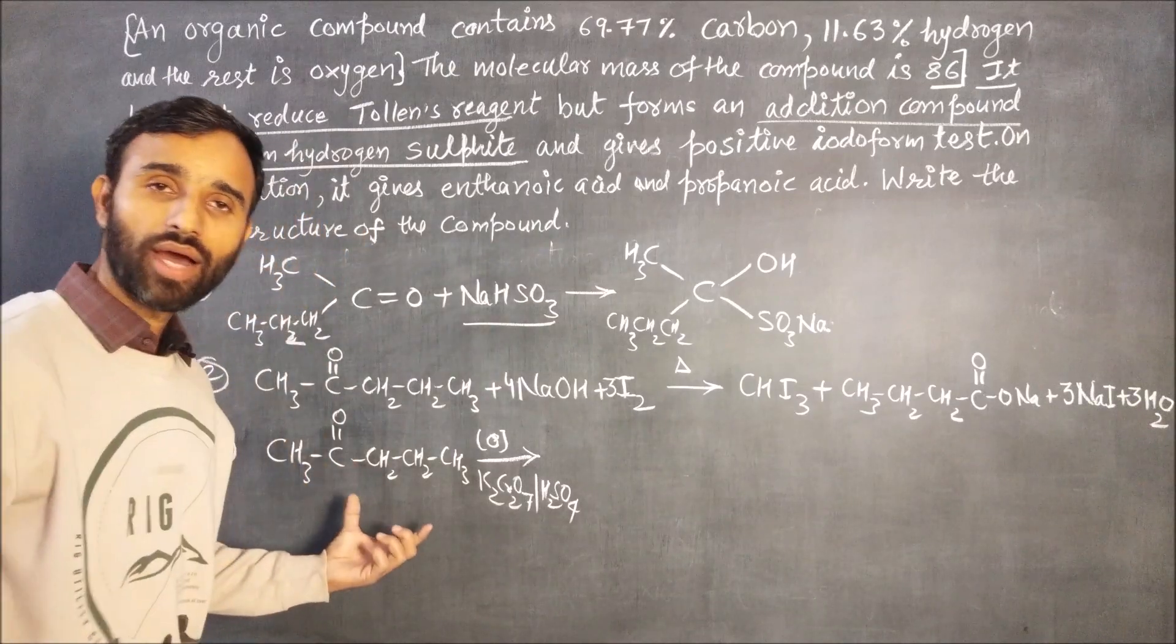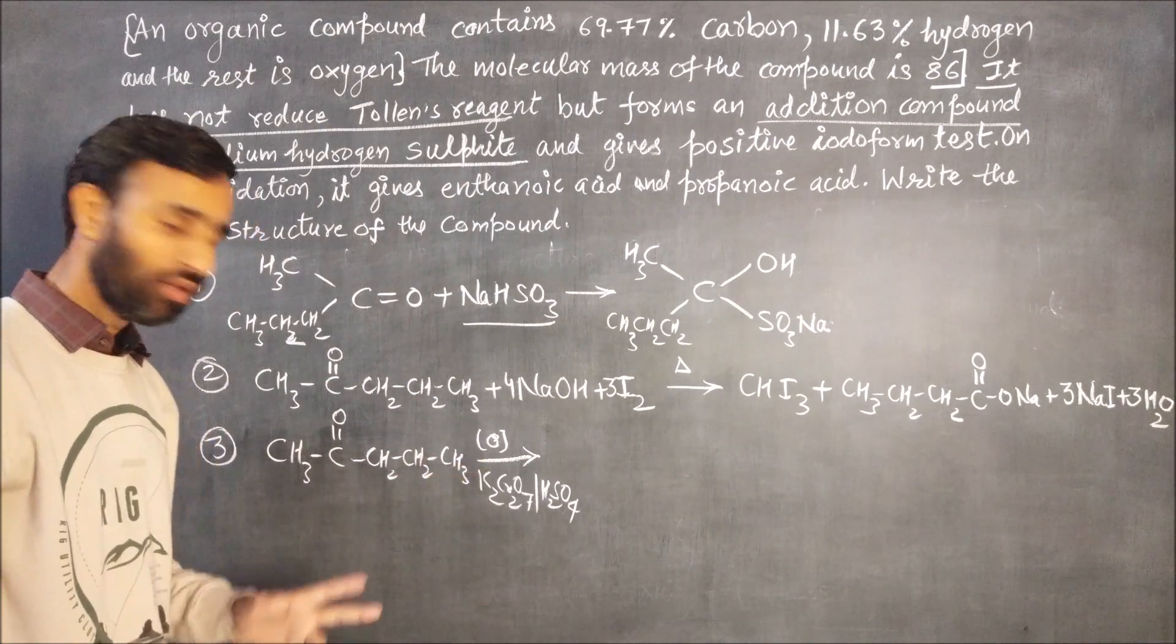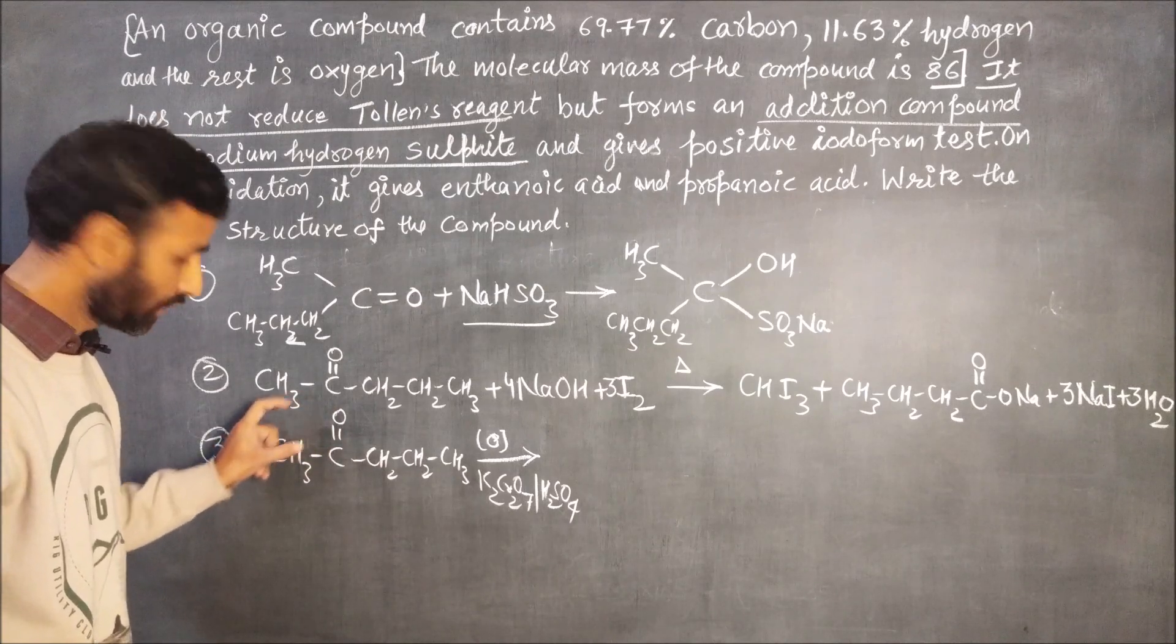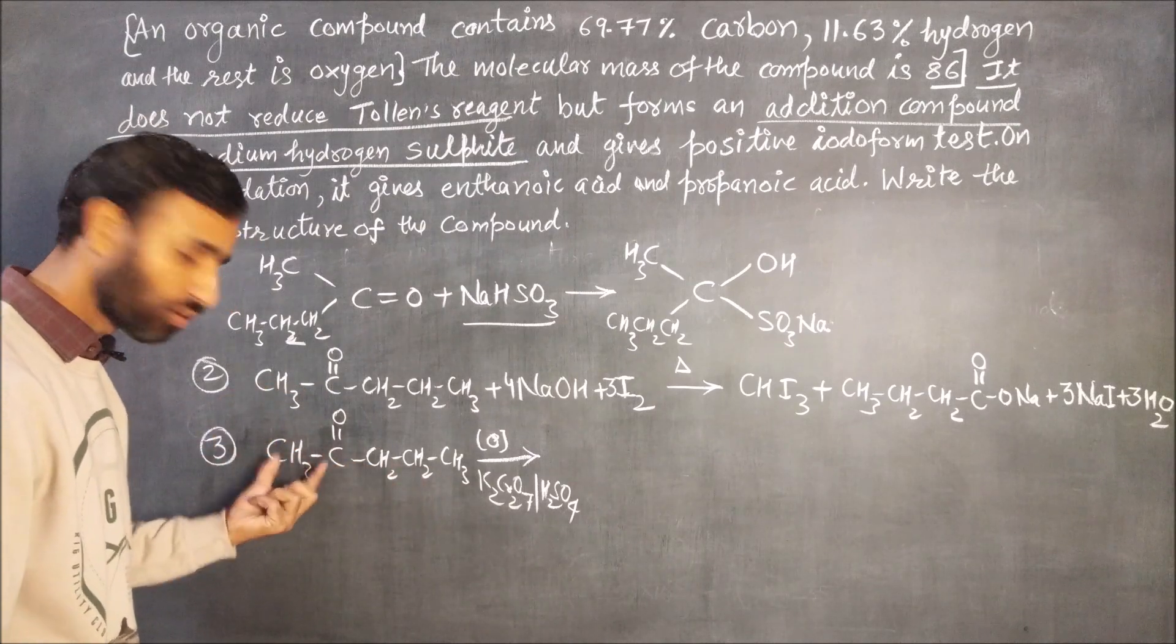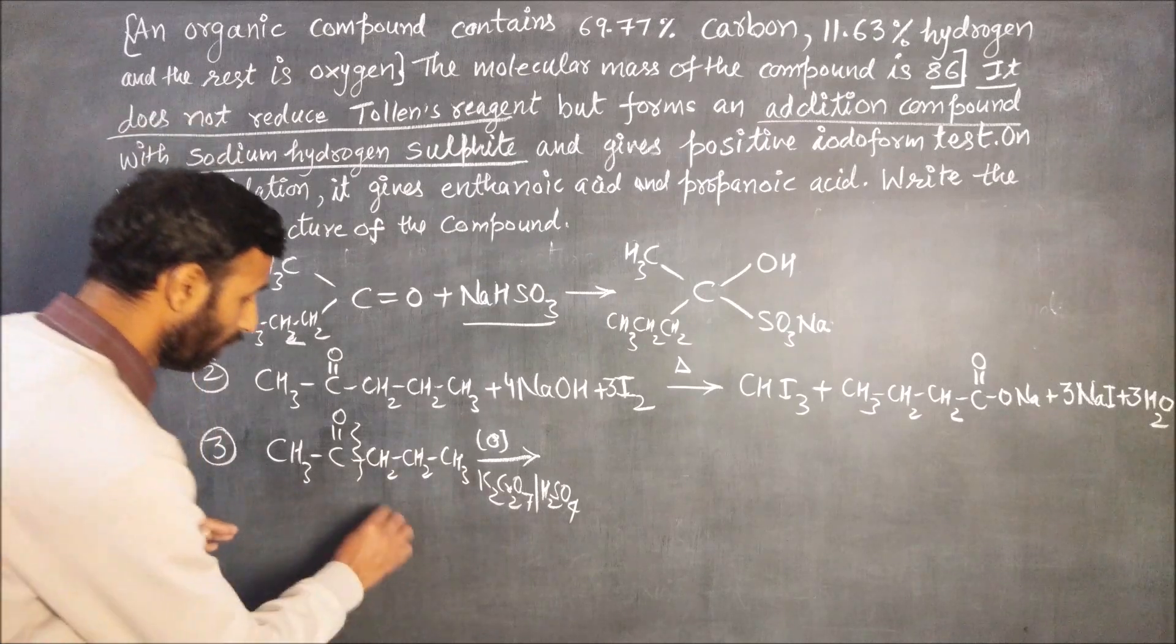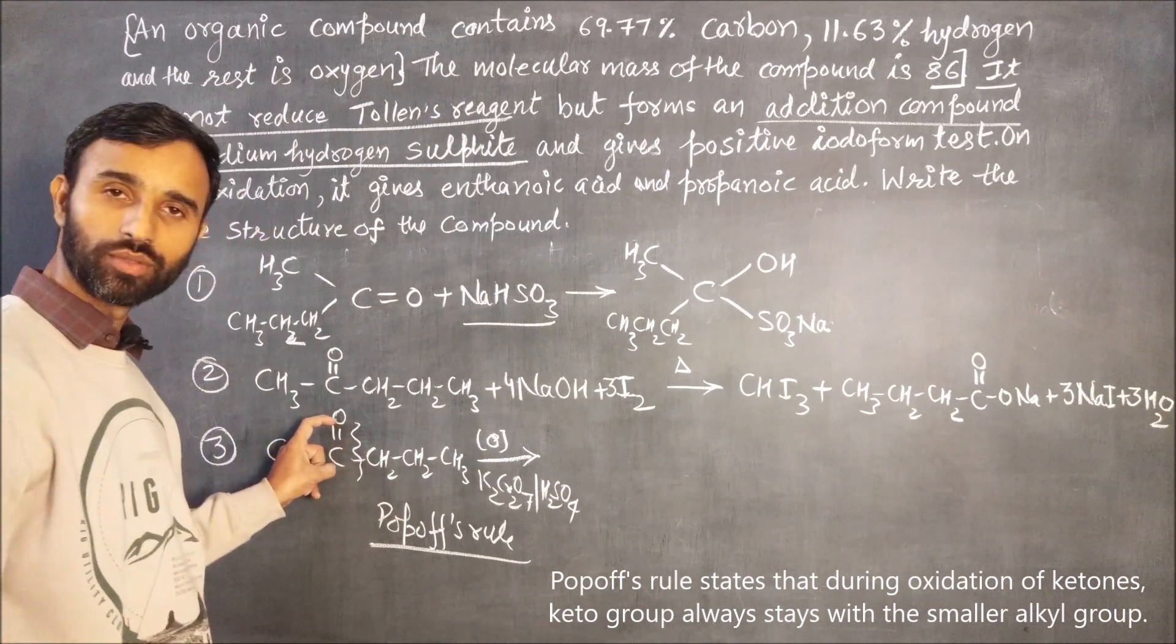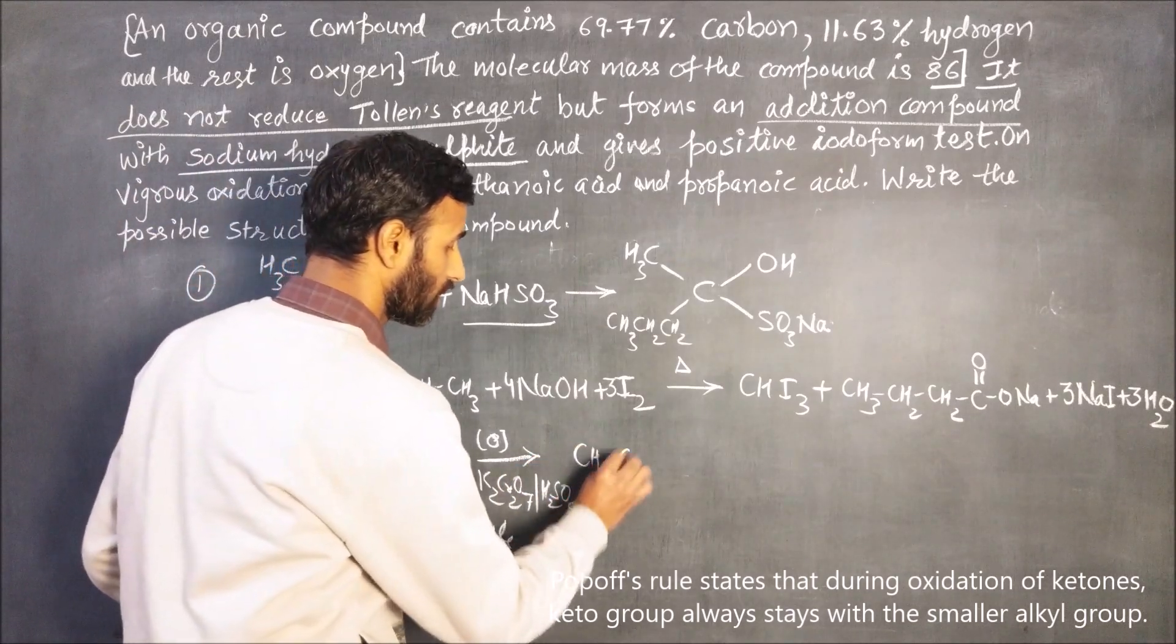Now in case of unsymmetrical ketones to oxidize under vigorous condition, carbon-carbon bond breaks in such a way that CO group is with smallest alkyl group. CO group is with smallest alkyl group. This is POPOP's rule. POPOP's rule, in case of unsymmetrical ketones, keto group is preferably linked to the smaller alkyl group.